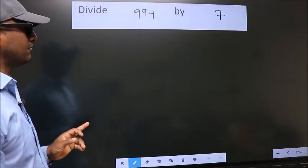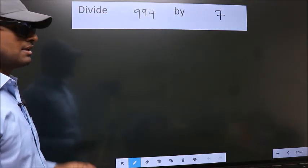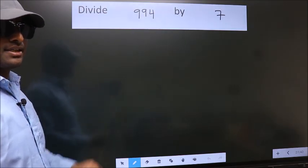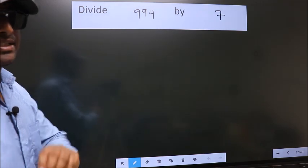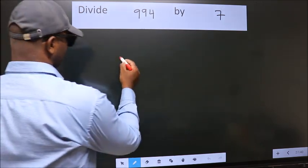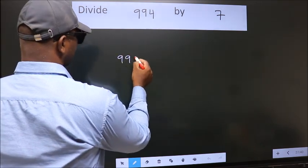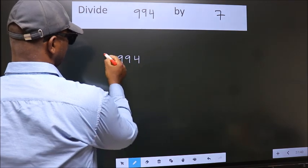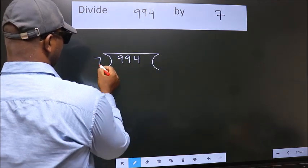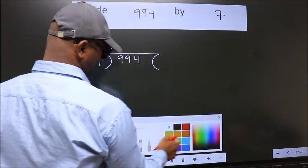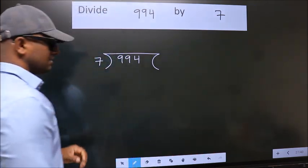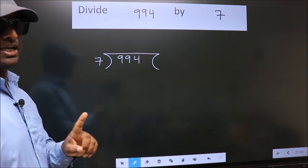Divide 994 by 7. To do this division we should frame it in this way. 994 here, 7 here. This is your step 1.